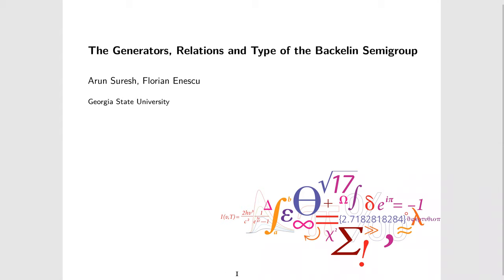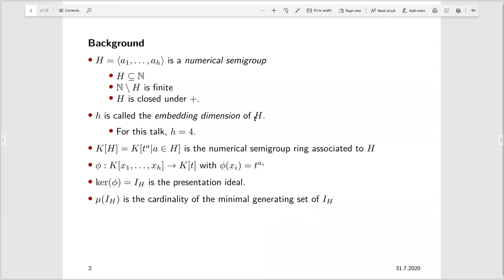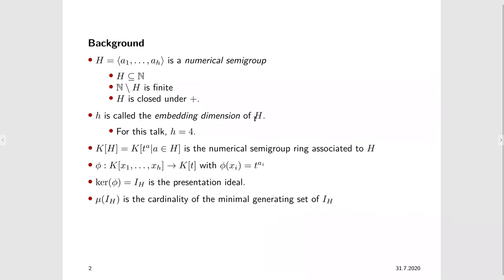The main object of study is numerical semigroups and numerical semigroup rings. A numerical semigroup is just a subset of the natural numbers such that its complement in the natural numbers is finite and it is closed under addition. We say that A1 through Ah generate the semigroup if any element of the semigroup can be written as linear combinations of those elements. The little h is called the embedding dimension of the semigroup, and for the purposes of this talk, little h is always going to be 4 — we're looking at 4-generated semigroups.